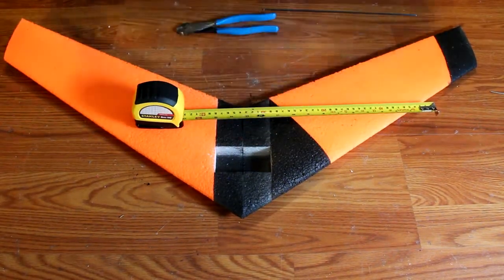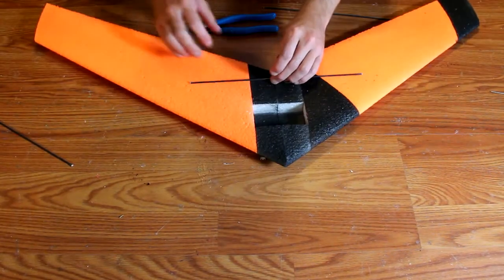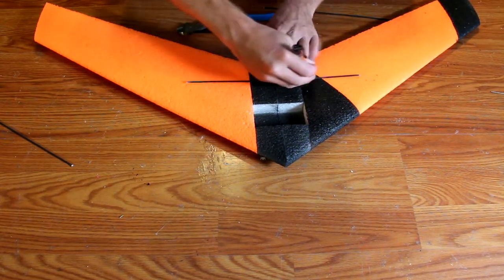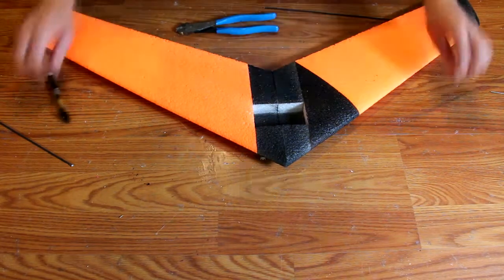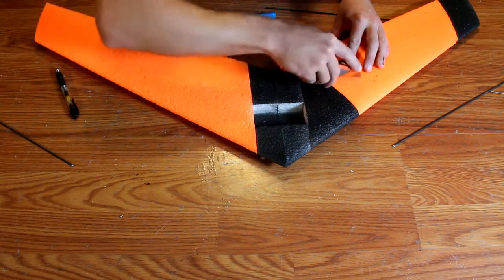Cut each of your spars into three sections: one 12 inch and two 16 inch rods. The 12 inch rod will go in the back of the plane across the wing. You want it to be about two to three inches back from the rear of the airplane.